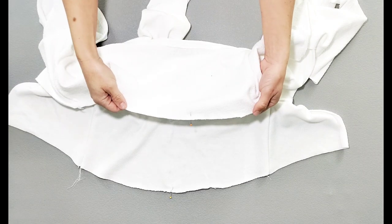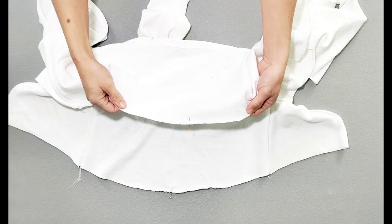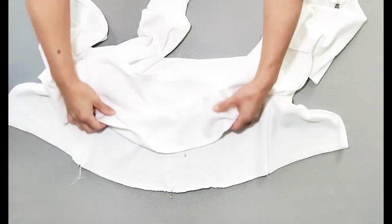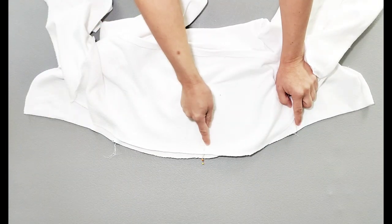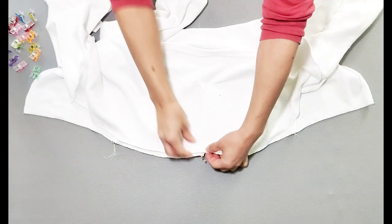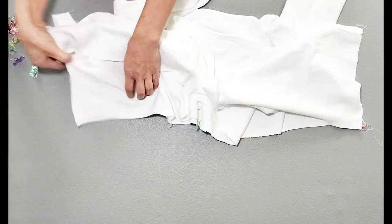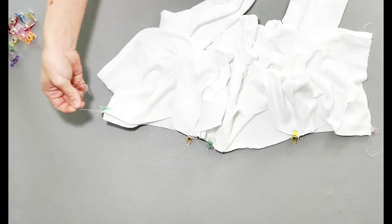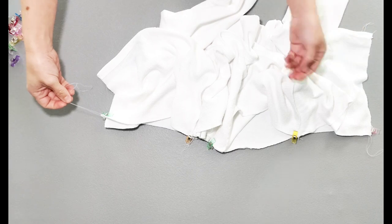Now place the basted edge of your skirt to the bottom of your bodice, right sides together, matching center backs, side seams, and center fronts. And now pull your gathering stitches so that it's a perfect fit.